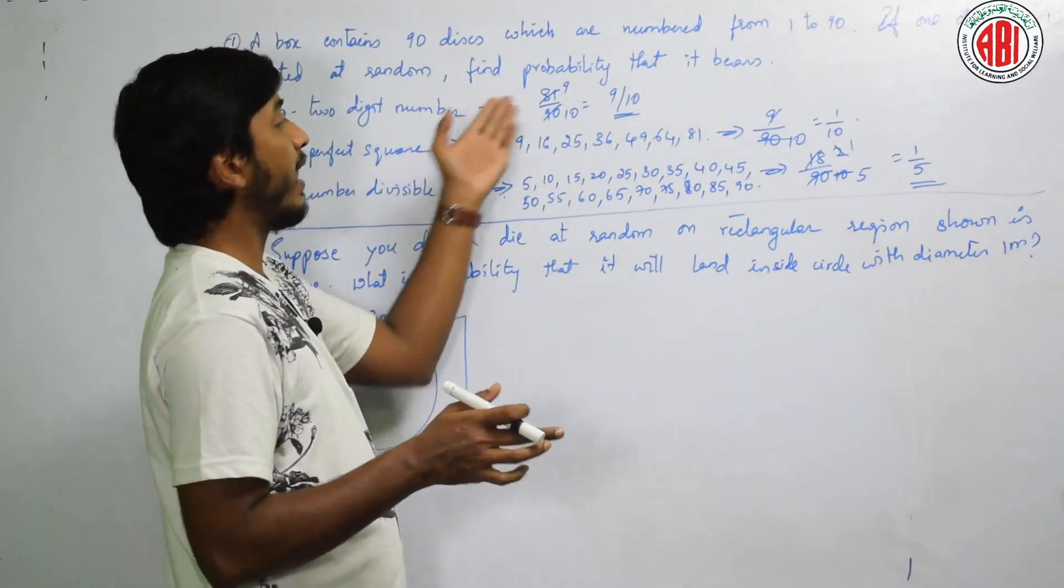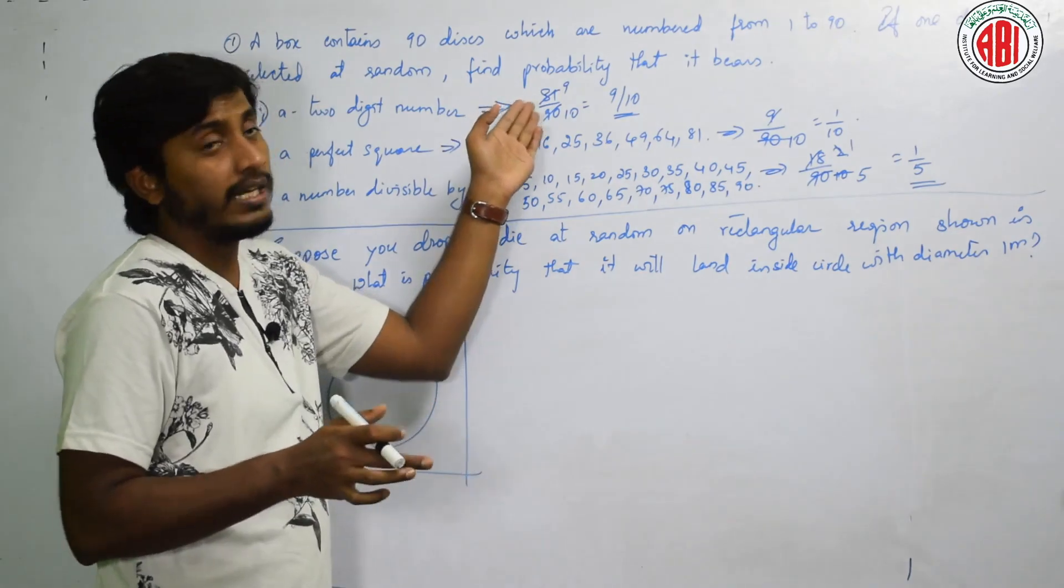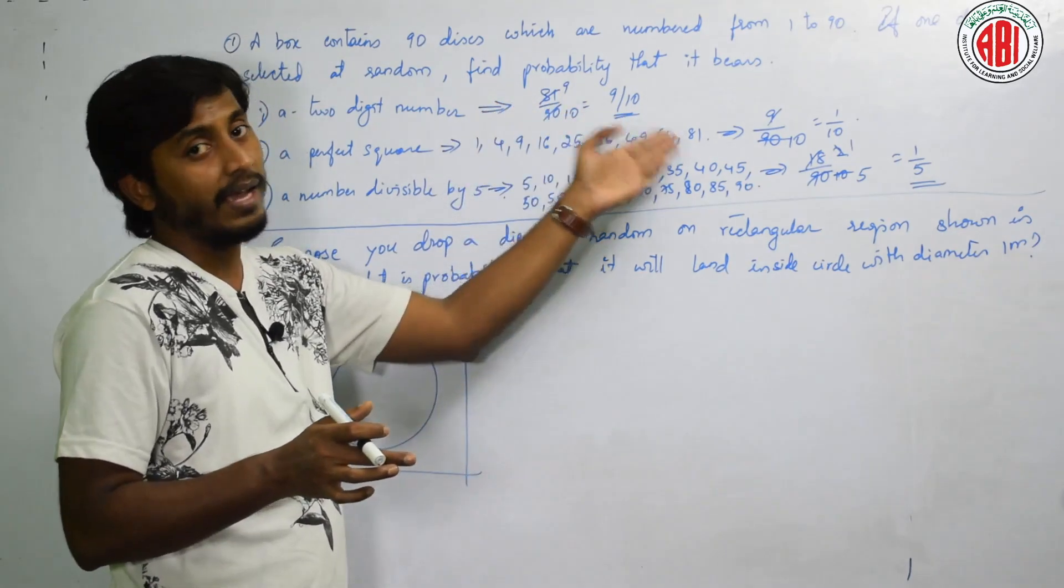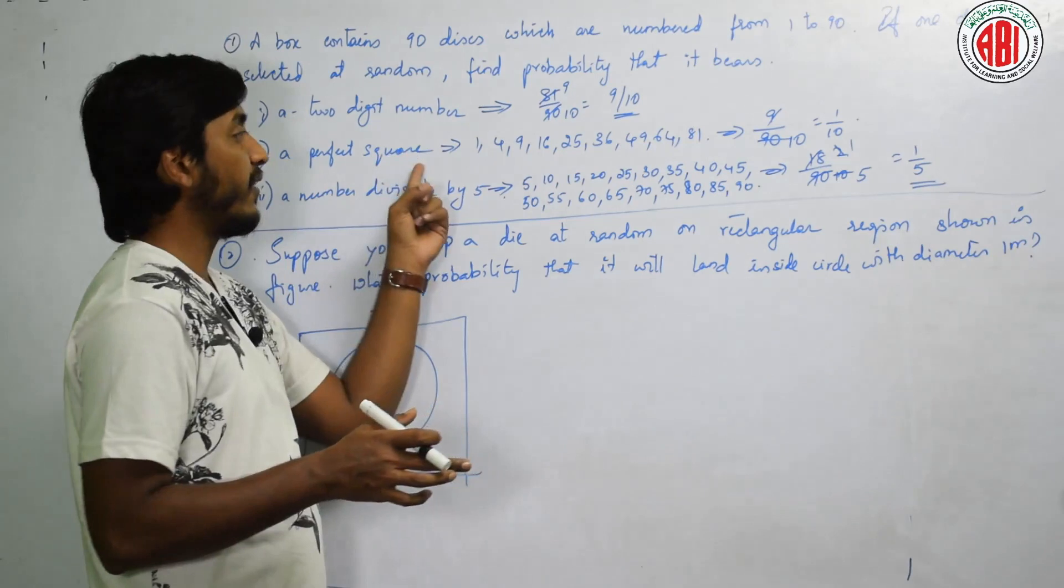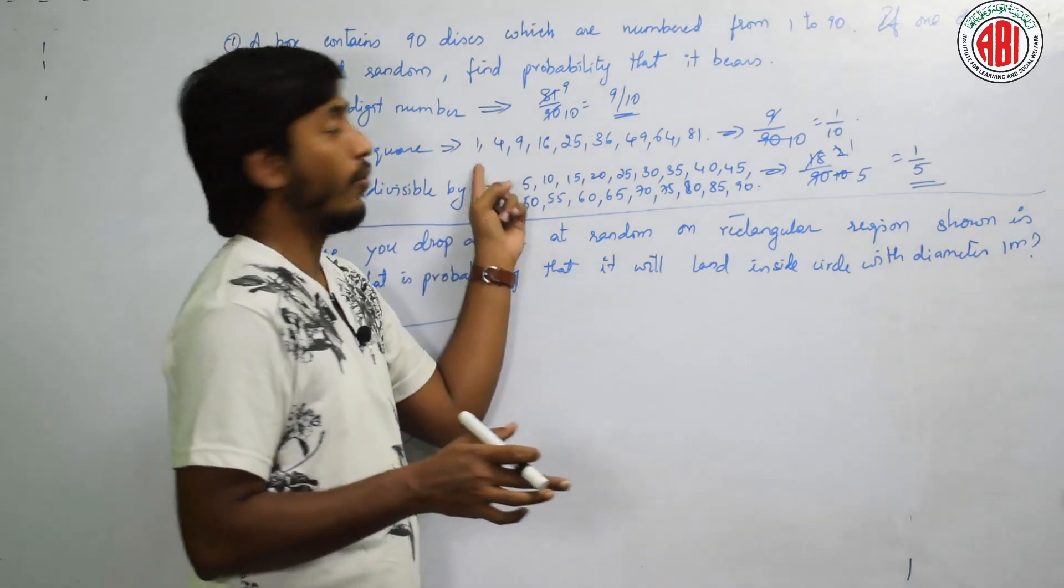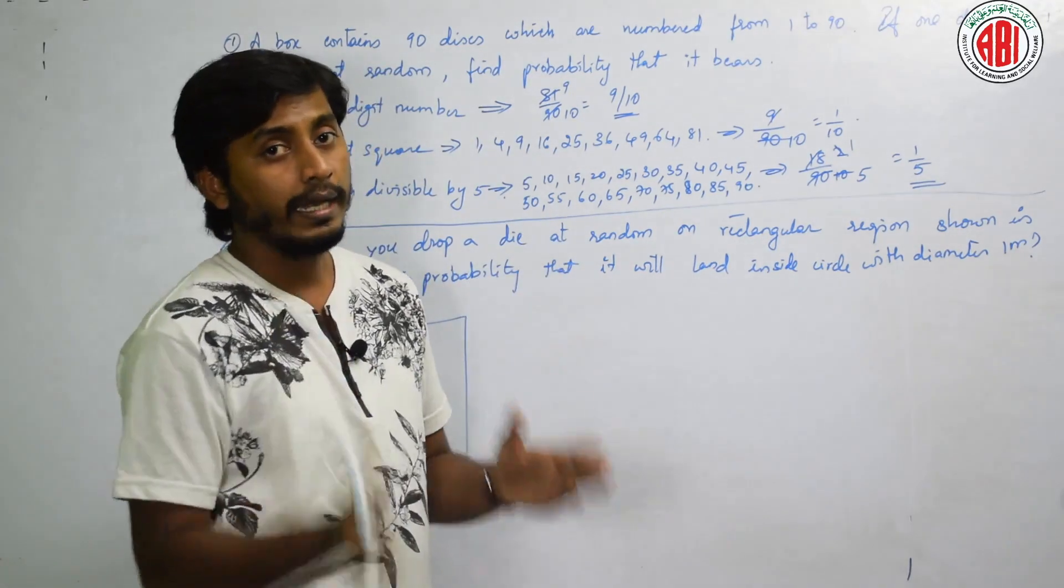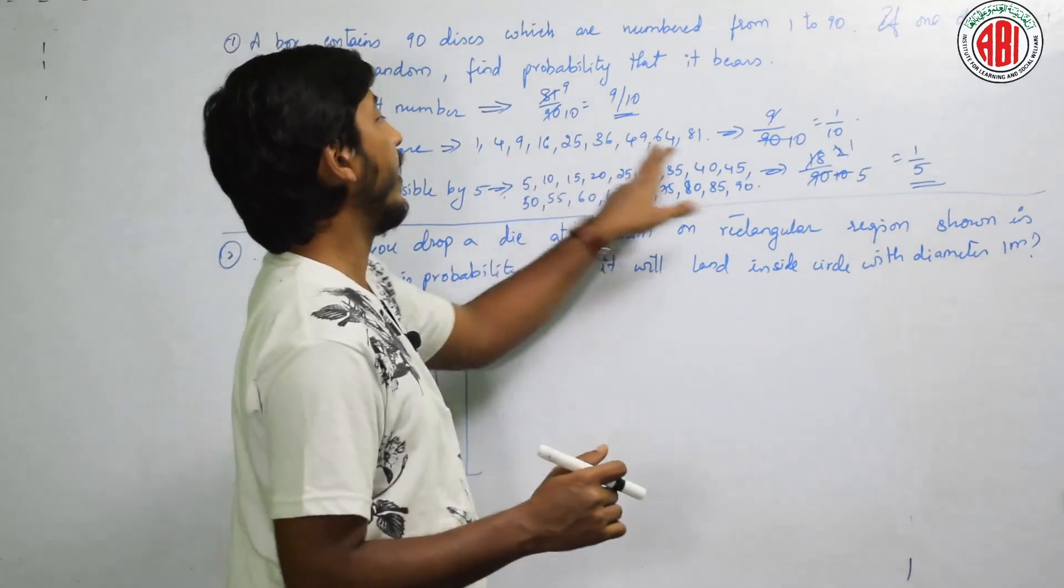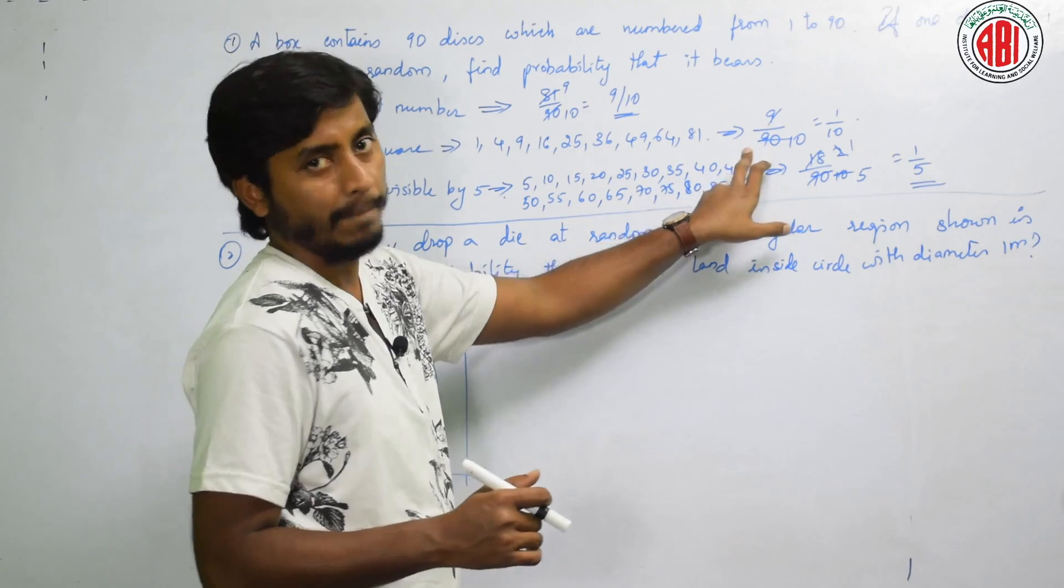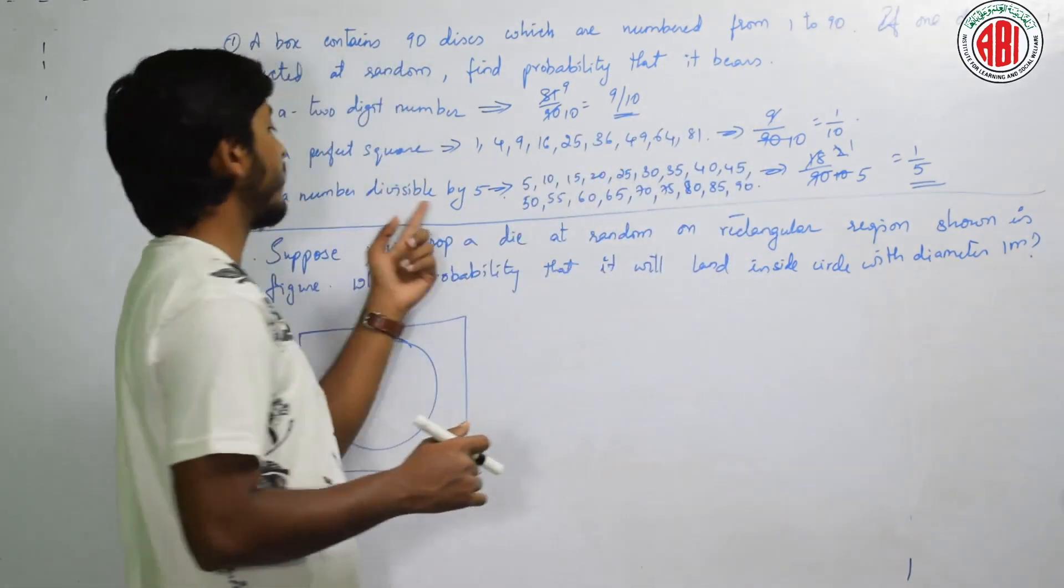That is why it is called as 2 digit number from 10 to 90, because my last digit itself is 90. That is, if it is a 2 digit number I get it as 81 two digit numbers divided by 90, that is 9 by 10.